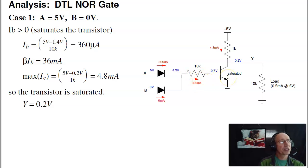That drives the transistor. If beta is 100, that allows 36 milliamps to flow. I'm only trying to push 4.8 milliamps. So since beta IB is more than IC, 36 is more than 4.8, the transistor saturates, and you get 0.2 volts out.